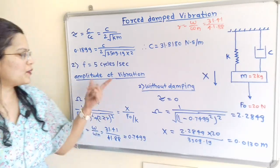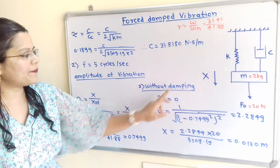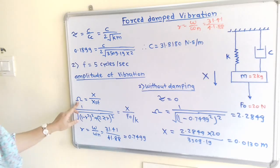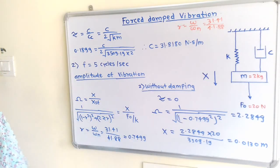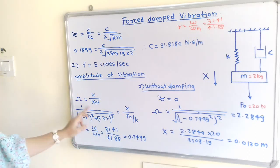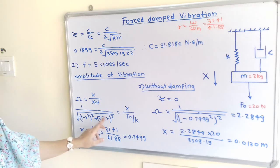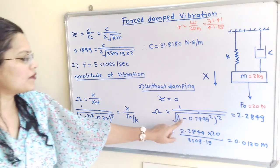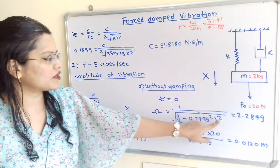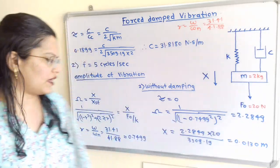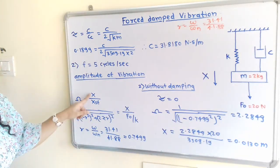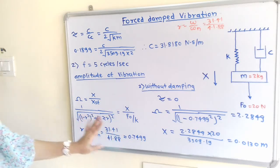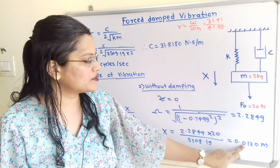Now we find the amplitude without damping. Without damping, zeta = 0. In the magnification factor formula, the second term (2ζR)² becomes zero, giving: Ω = 1/√(1 − R²) = 1/√(1 − 0.7499²) = 2.2849. Using X = Ω × (F₀/K), we calculate X = 0.0130 meter — the amplitude without damping.